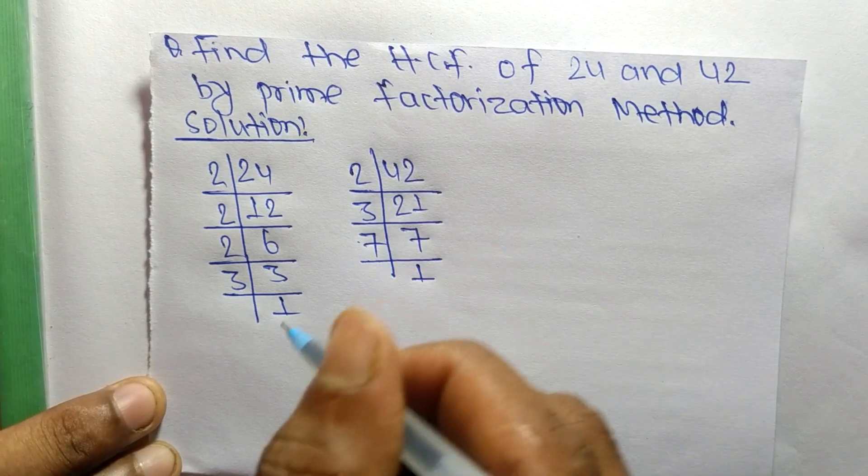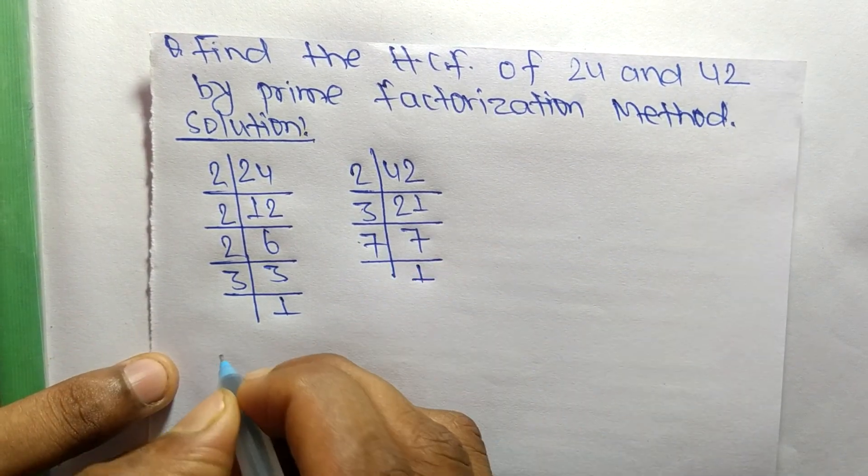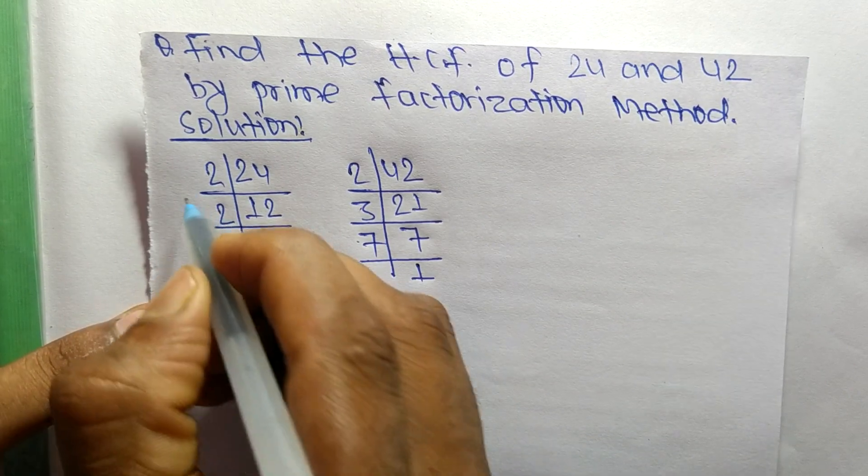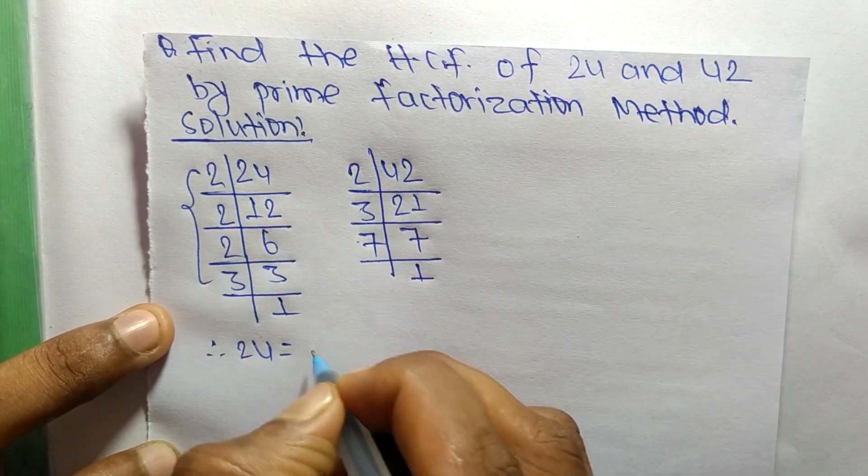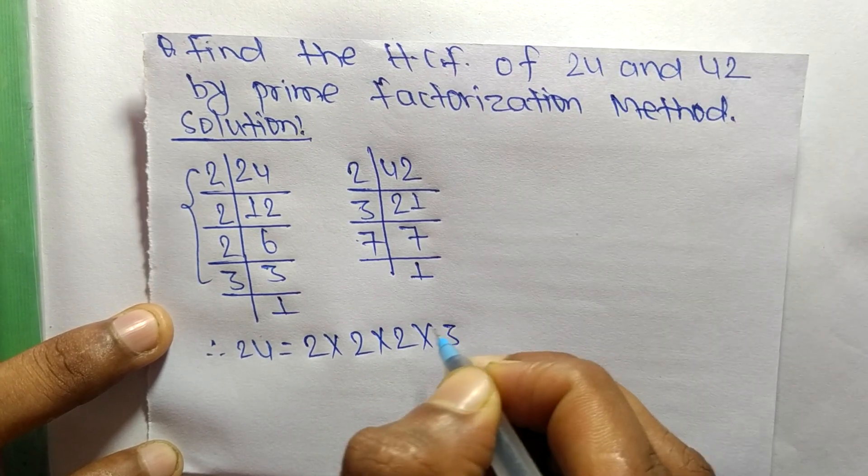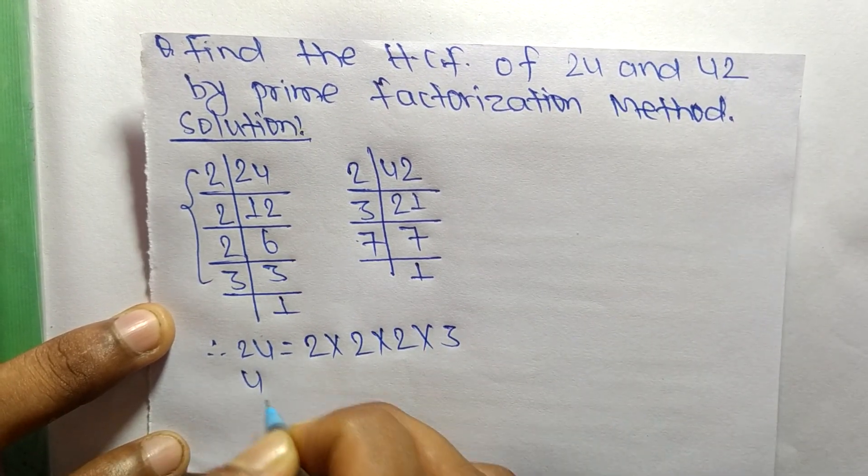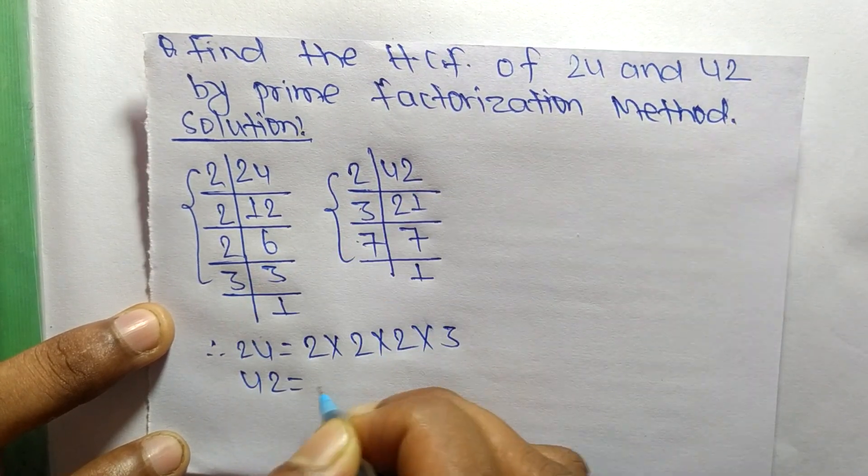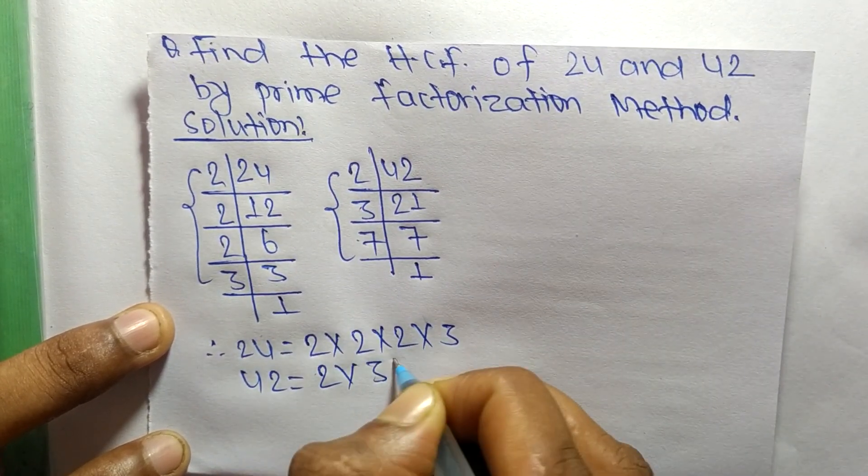So now from these prime factors we can write 24 is equal to 2 times 2 times 2 times 3. Likewise, 42 is equal to 2 times 3 times 7.